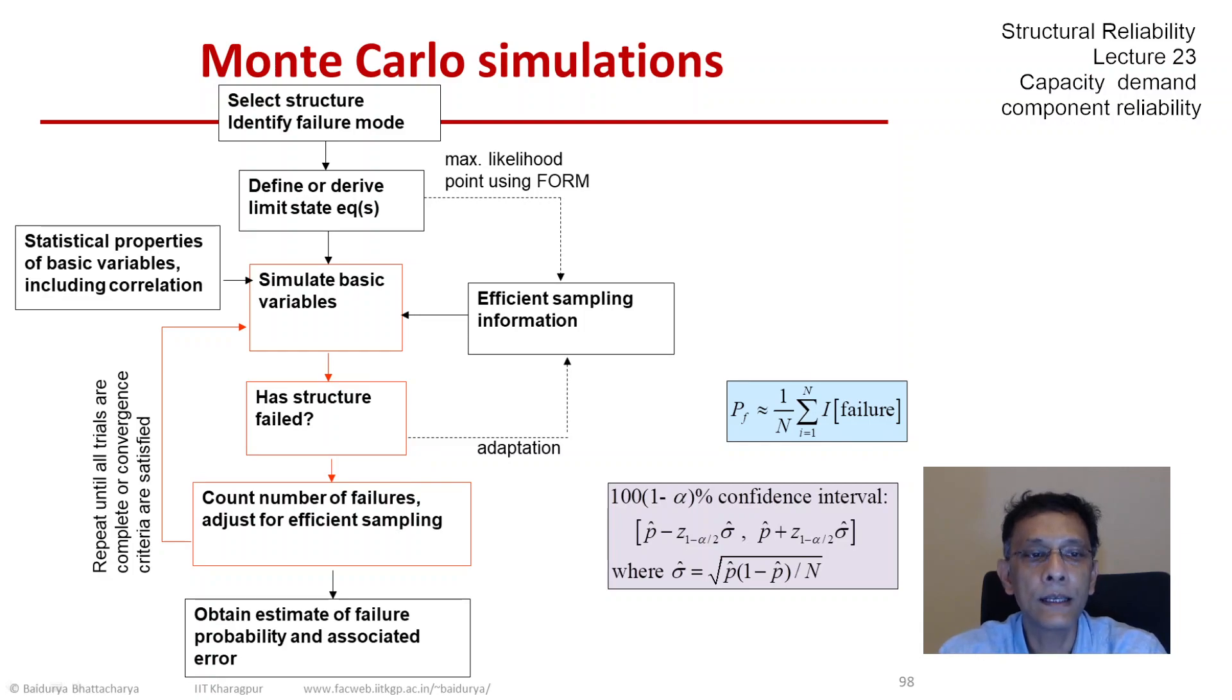In fact, if you do all of that, then that simple PF as the average of the indicator functions would not work in most cases. So we have to keep that in mind also, and that's why you see in the last red block we have count number of failures adjusted for efficient sampling. Now let us solve a couple of examples.